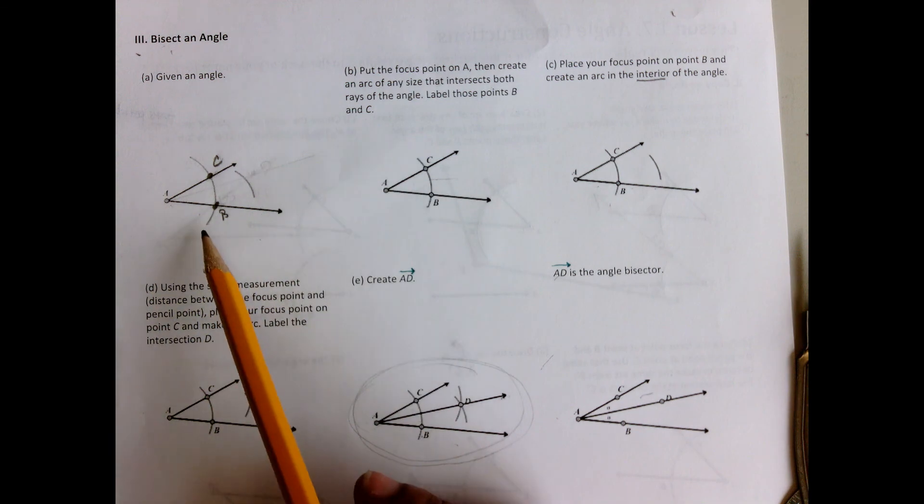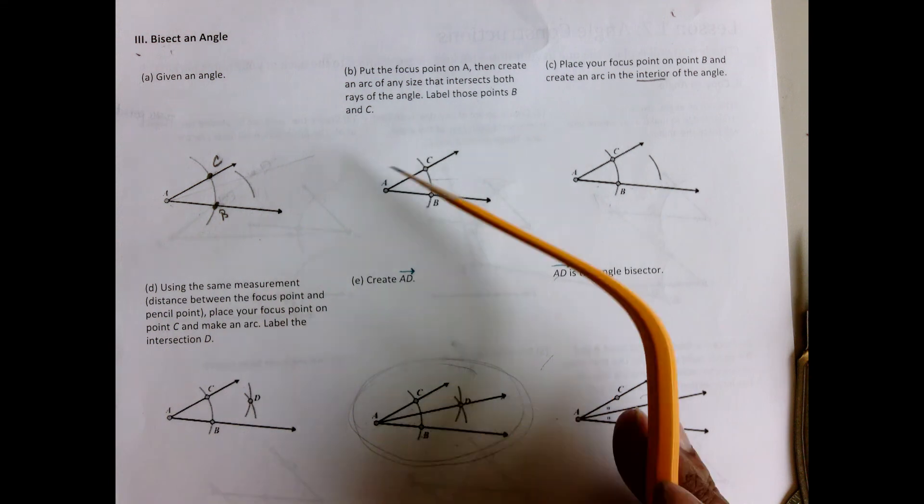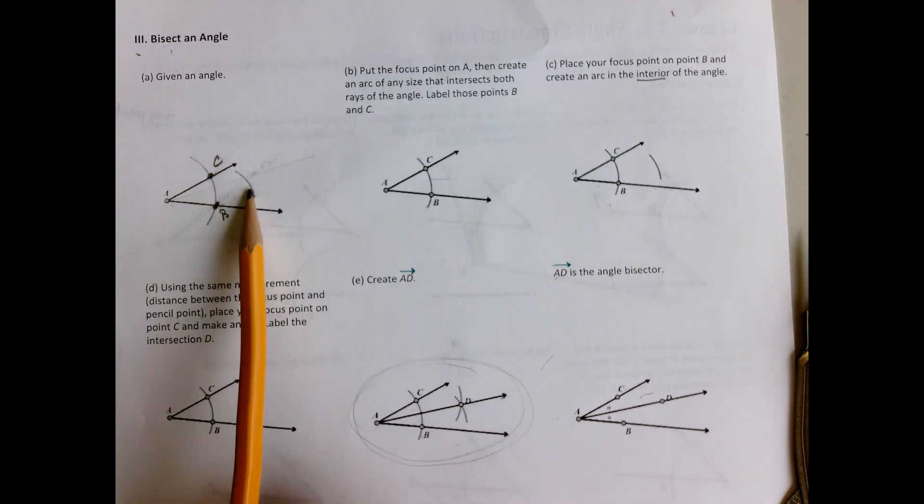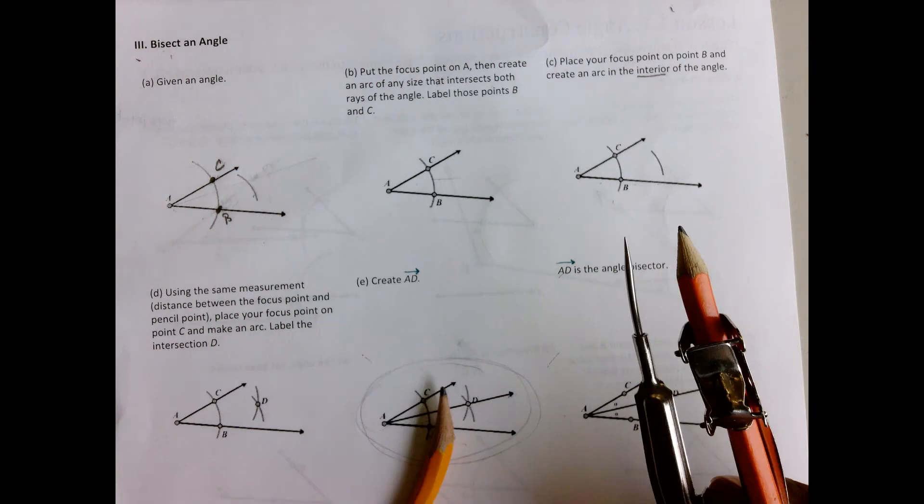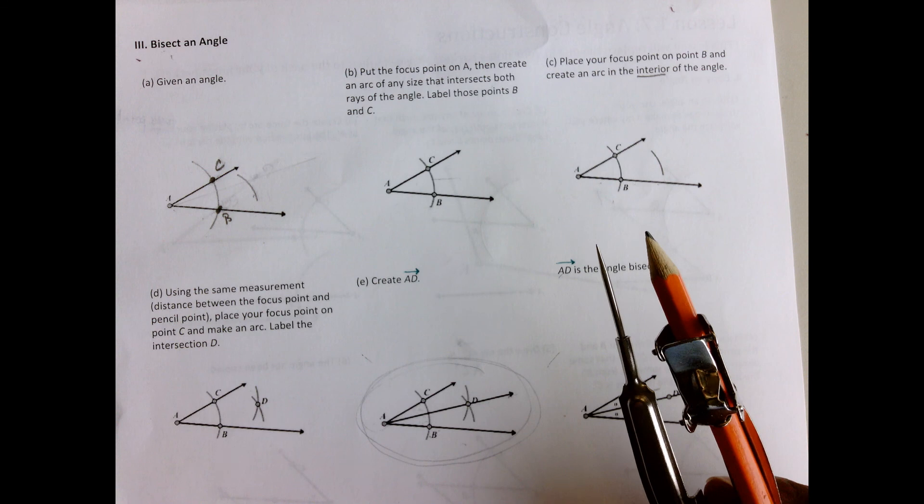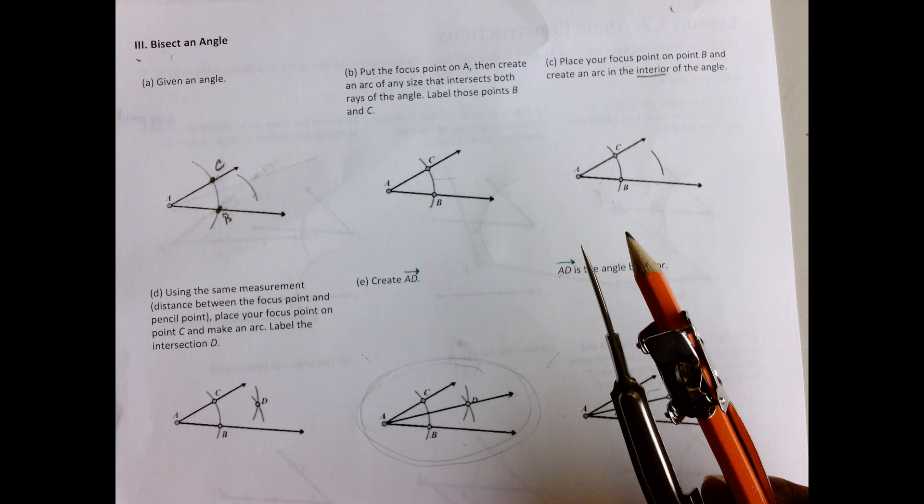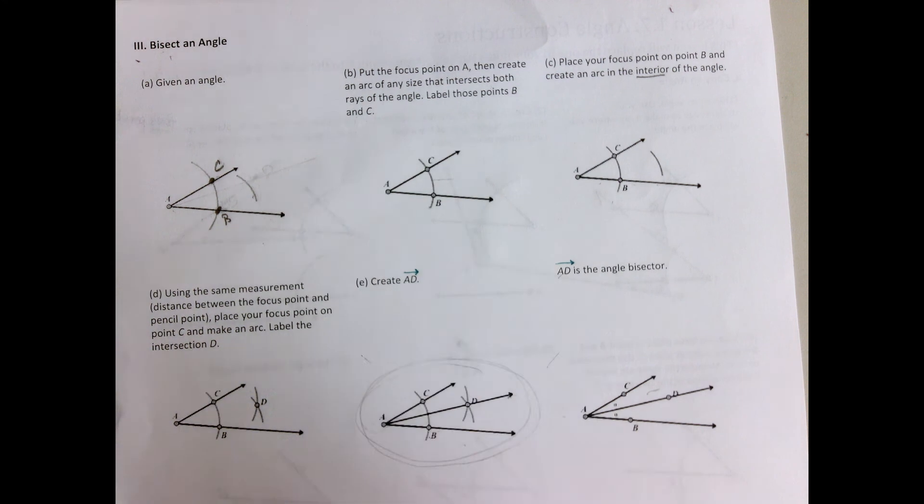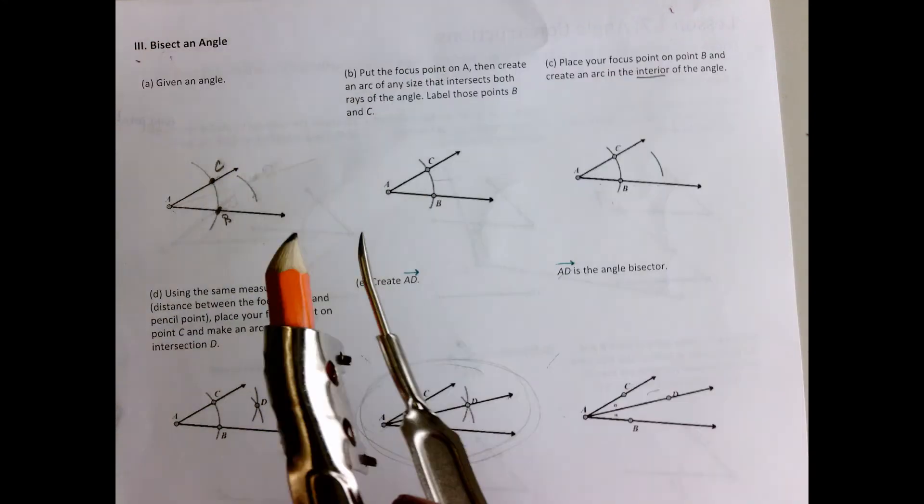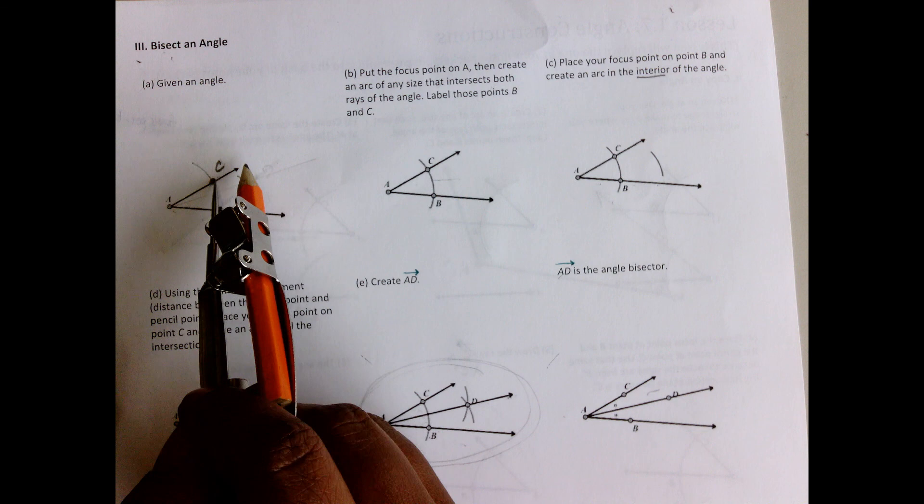Keep the distance between your focus and pencil points the same, and then put your focus point on point B and make another arc using that same measurement. The same one that we've been using this whole time. We are going to place our focus point on C and then we're going to label that intersection D.